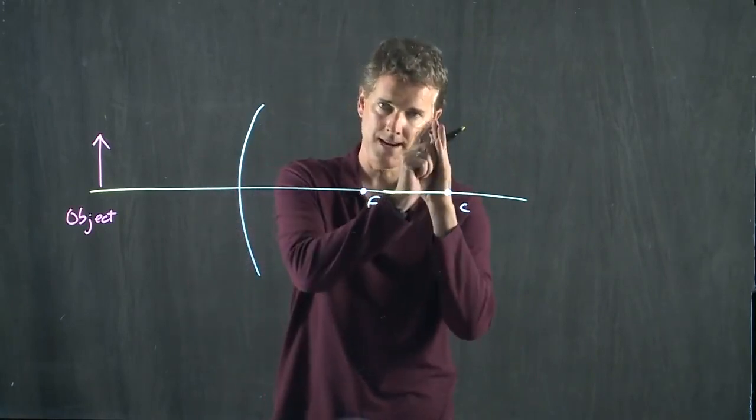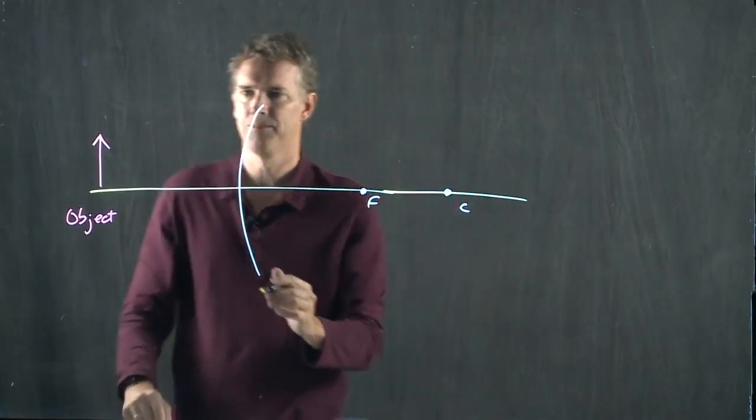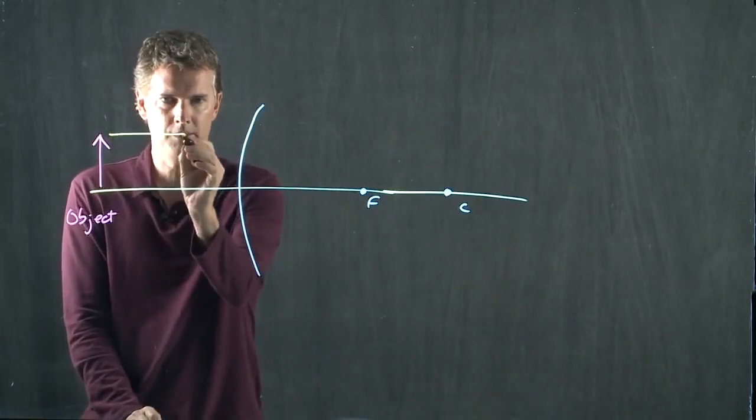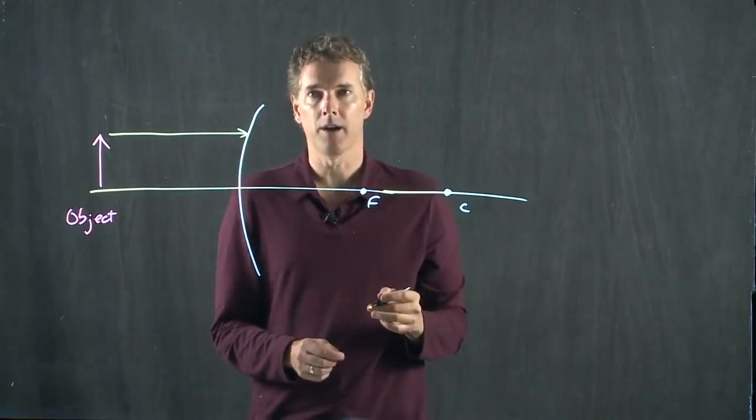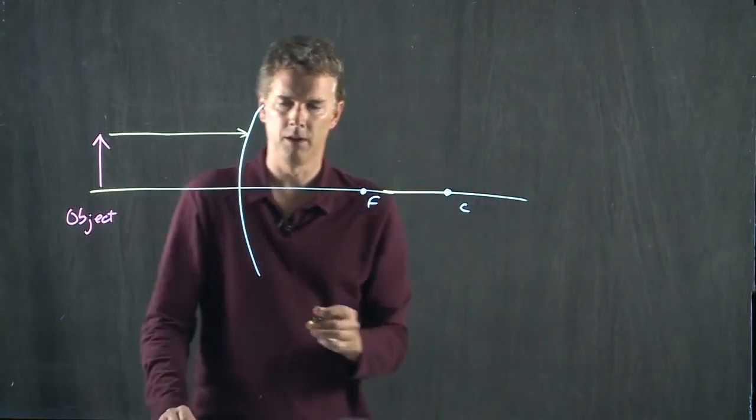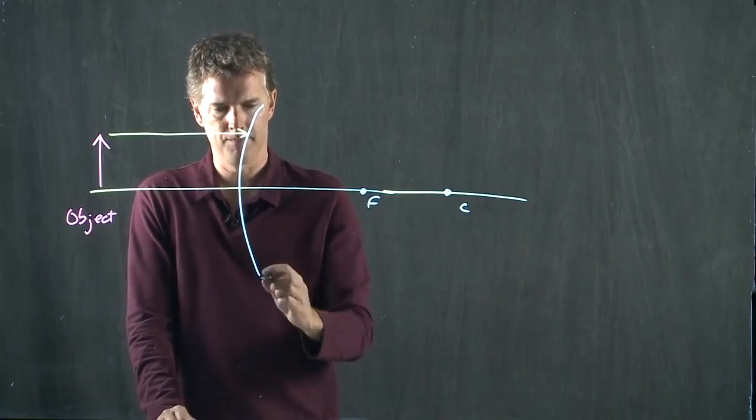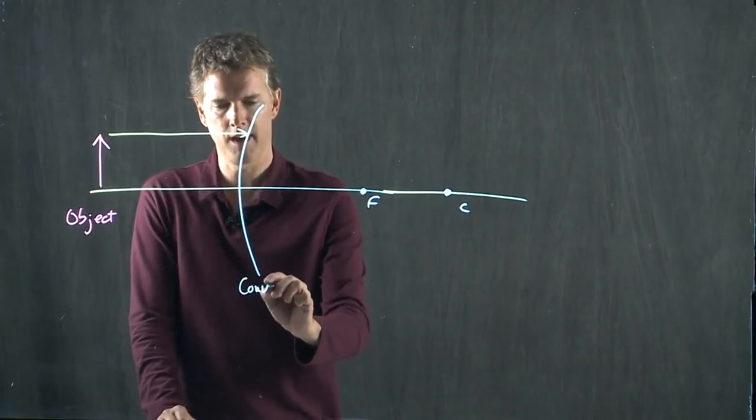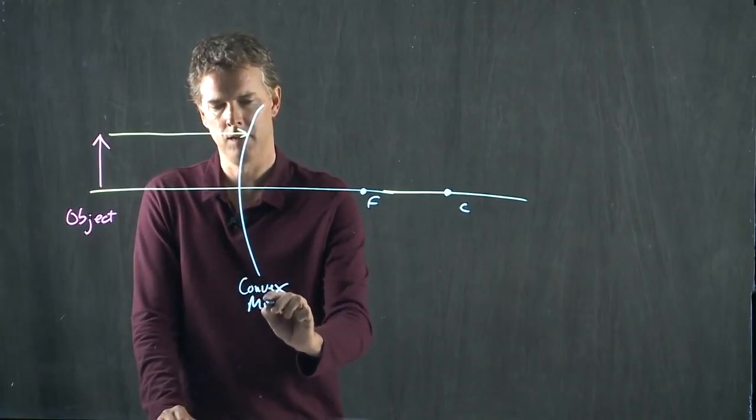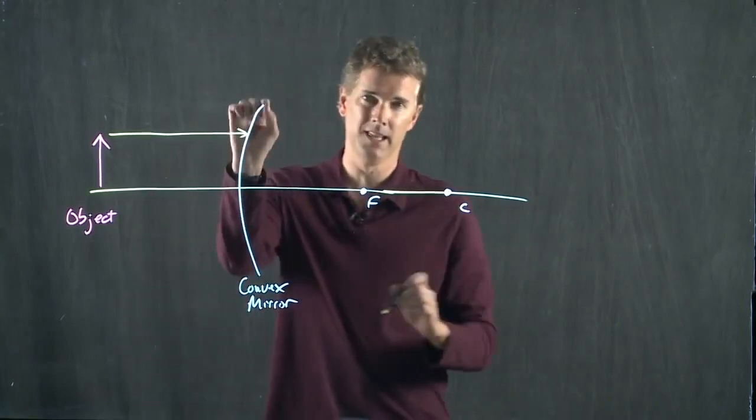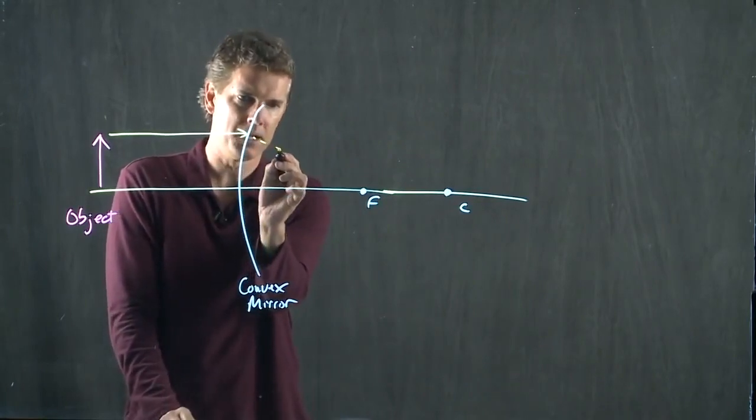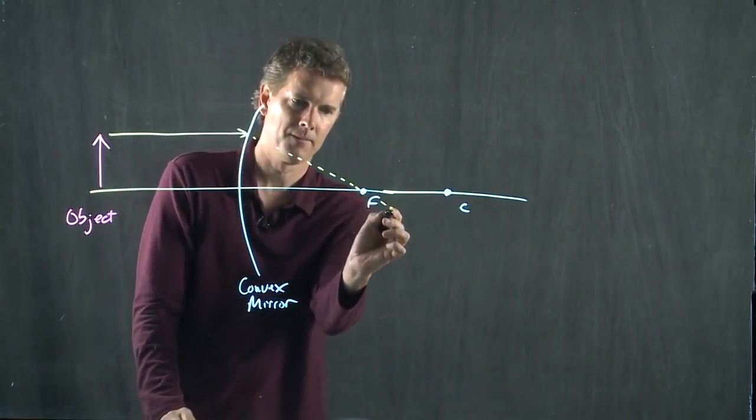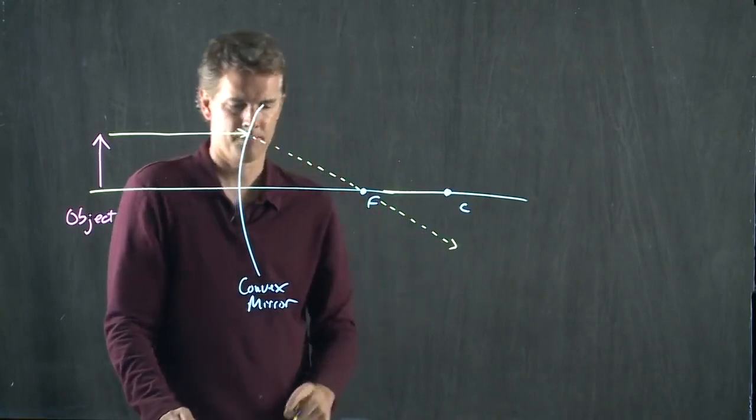This says that rays that are parallel to the optic axis are going to go through the focus. But this thing is a mirror, right? It's a convex mirror, so there's no real light ray that penetrates through the mirror. It becomes a dashed line. This was rule number one.